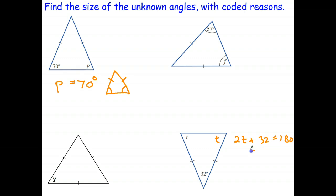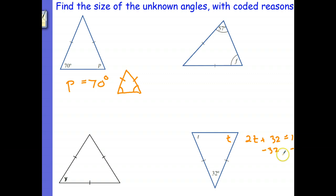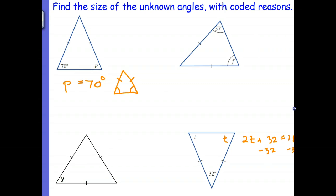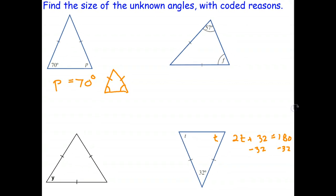So subtract 32 from both sides. Again, we're using an algebraic method here. Solving equations. And how do I get that to go back? There we go.